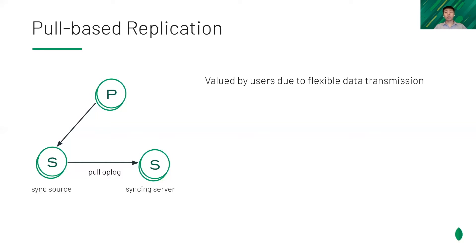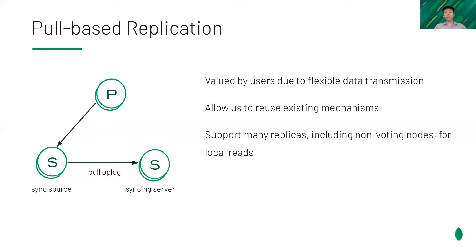For instance, users may want to minimize data transfer across different data centers. Second, it allows us to reuse existing mechanisms. As an example, the op-log is stored in the database collection; pulling the data is implemented by using queries and cursors with some optimizations. Last, MongoDB supports up to 50 replicas for local reads. By offloading op-log reads from the primary, a pull-based model fits naturally into this use case.